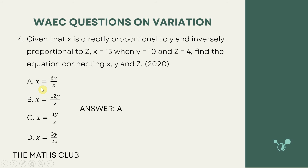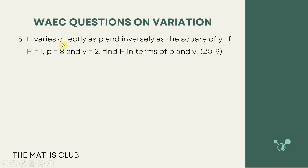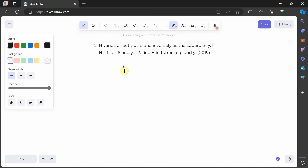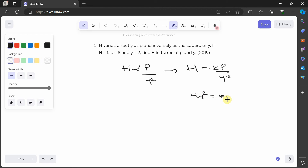The next question is from 2019 and says: h varies directly as p and inversely as the square of y. If h is equal to 1 when p is equal to 8 and y is equal to 2, find h in terms of p and y. Pause the video and try it yourself. Welcome back. h varies directly as p and inversely as y², so h is equal to kp over y². Cross-multiplying: hy² is equal to kp, so k is equal to hy² over p.